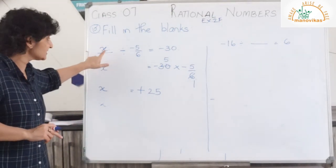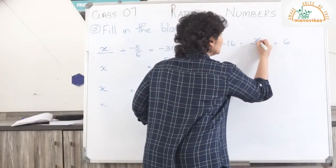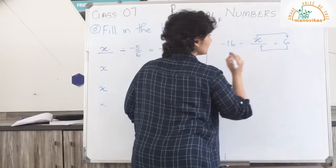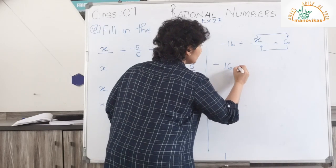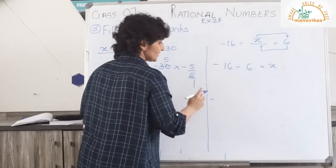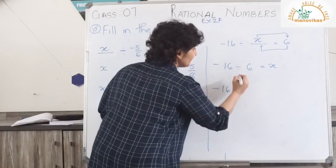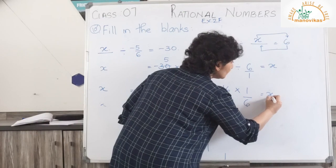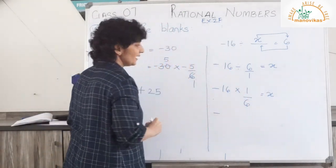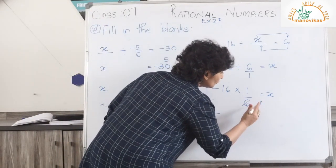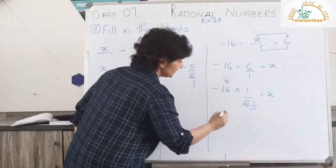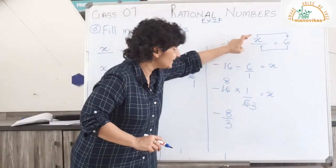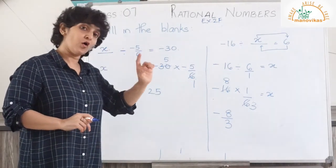Now let's see the next sub-part, where the blank is in the denominator: minus 16 divided by x equals 6. When the blank is in the denominator, we exchange and bring x here. So minus 16 divided by 6 equals x. That means x equals minus 16 multiplied by 1 upon 6. Minus times plus gives minus. Reducing: 2 threes are 6, 2 eights are 16, so my answer is minus 8 upon 3. Therefore, minus 16 divided by minus 8 upon 3 gives you 6.